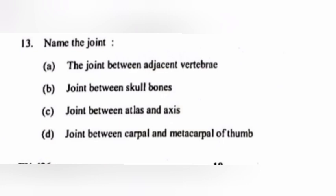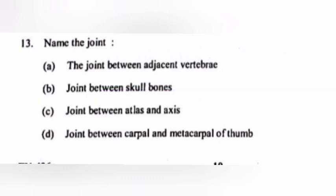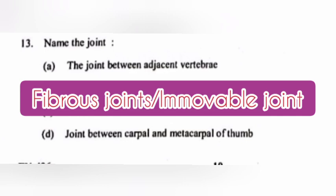Question 13. Name the joint. A. The joint between adjacent vertebrae. Answer: Cartilaginous joints or slightly movable joints. B. Joint between skull bones. Answer: Fibrous joints or immovable joints.